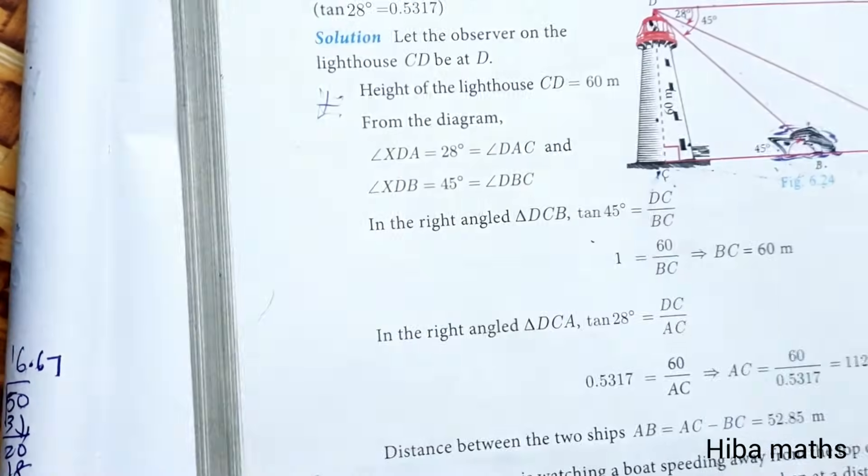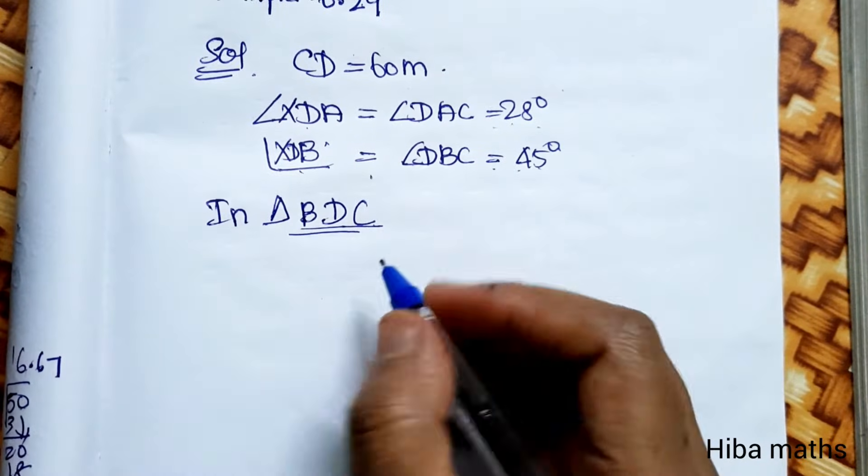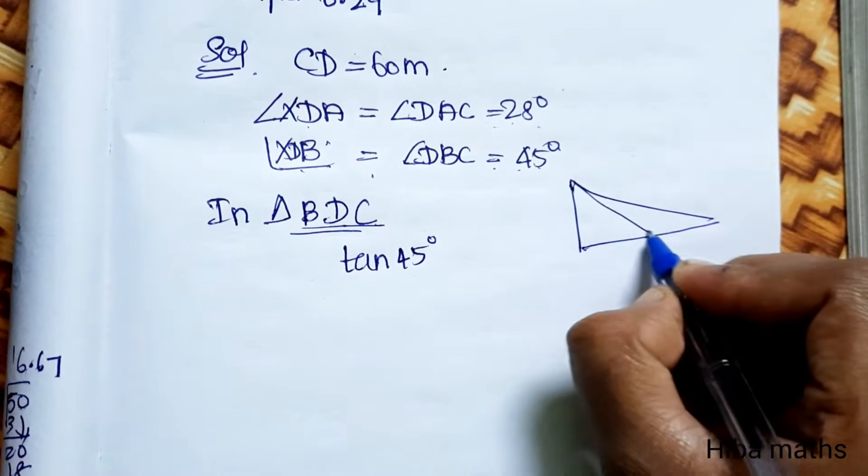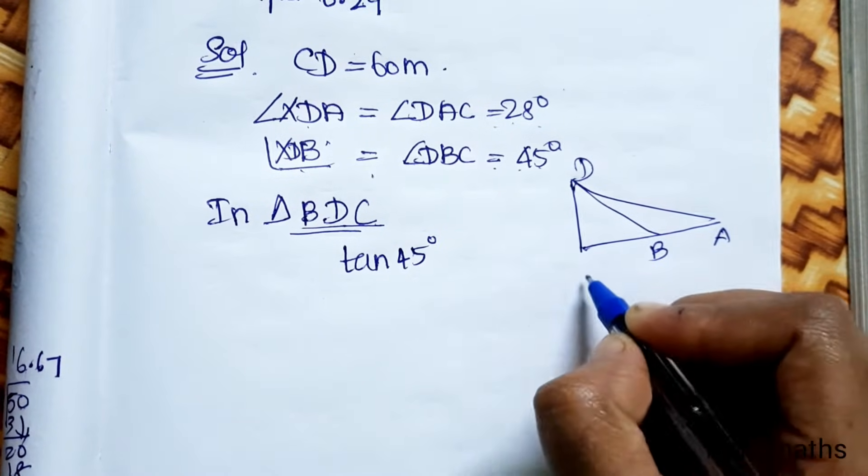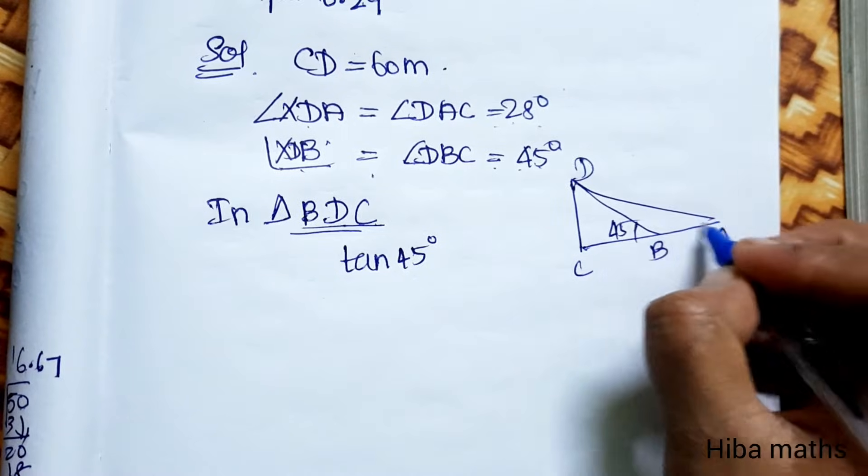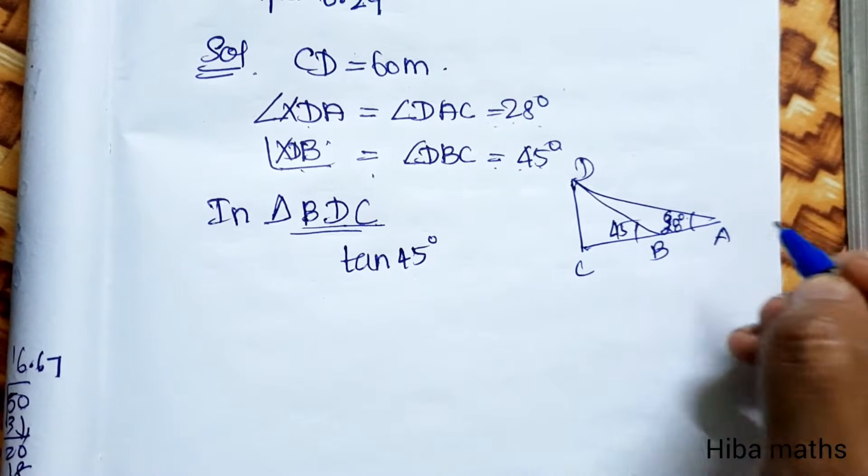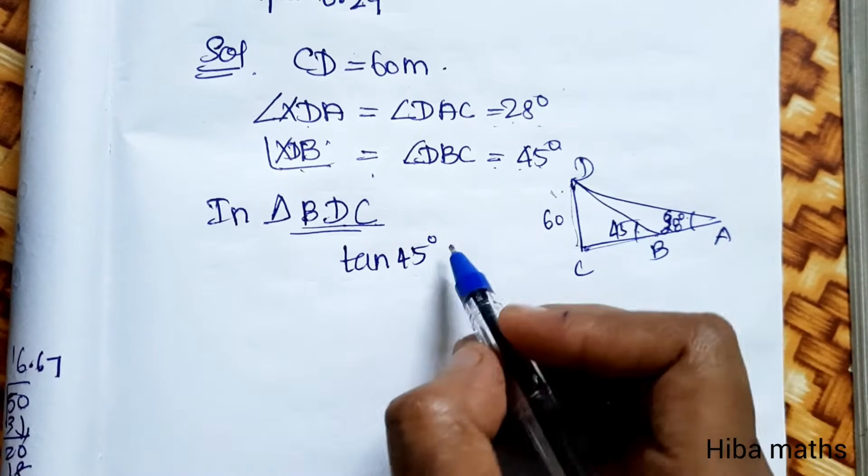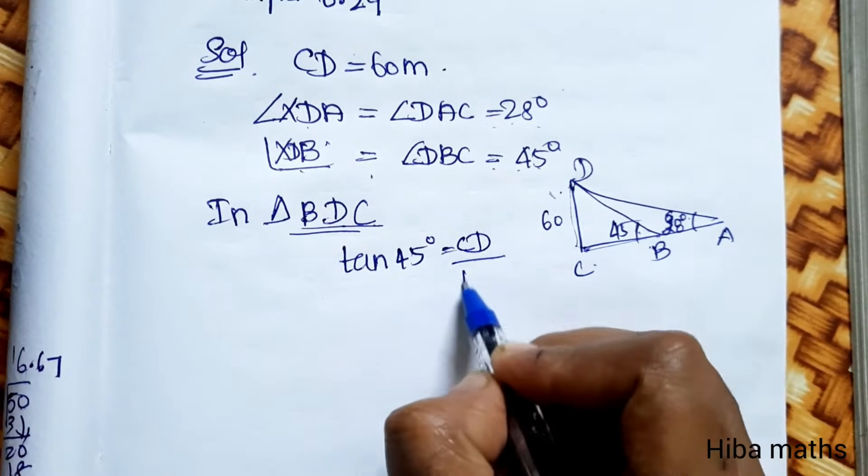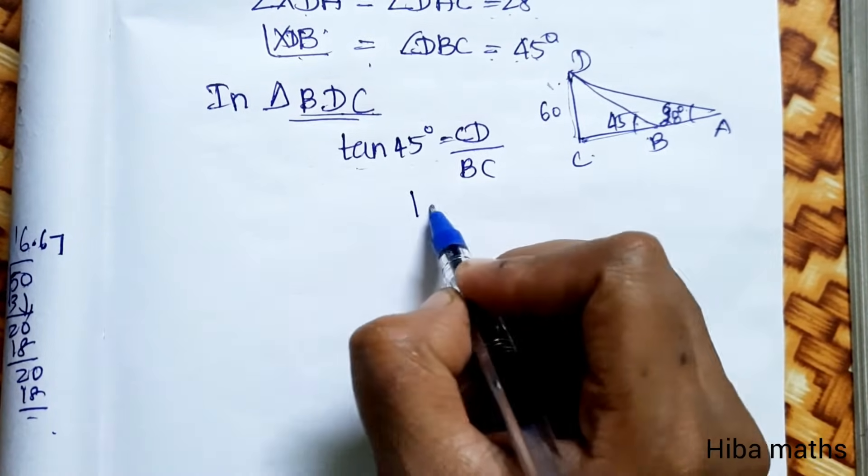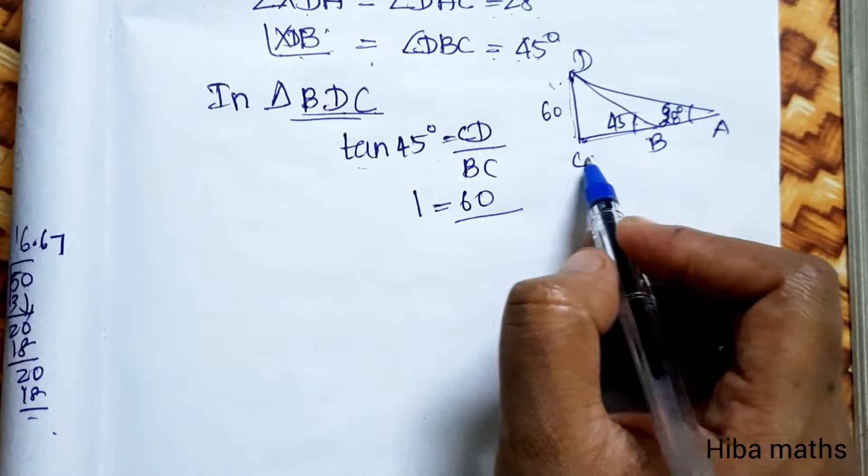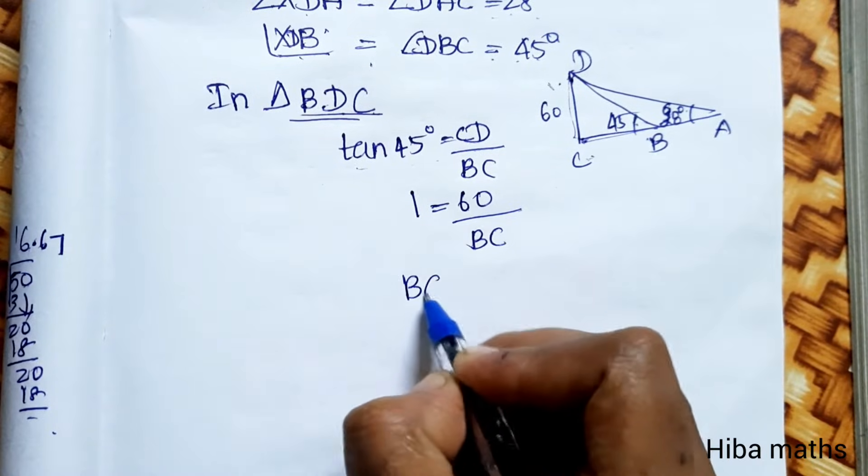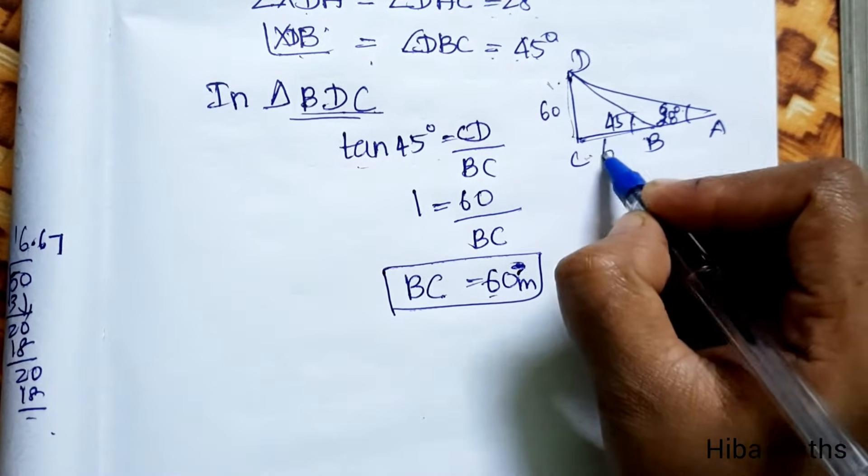Compare the diagram on the side. This is 45 degrees, this is 28 degrees, and the height of the tower is 60m. tan 45 equals opposite by adjacent, then CD by BC. tan 45 value is 1, CD value 60, BC value we can see. 1 into BC, BC that is equal to 60m. BC is 60m.